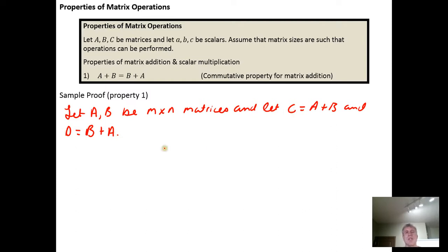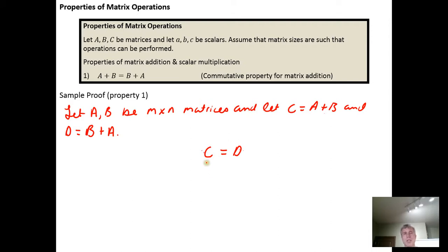Remember, we need to do this generically — not with a concrete example — to demonstrate that it's true for all matrices. For matrix C to equal D, we need to show that every corresponding element in each of the two matrices is the same. We represent the generic element in C as little c sub i j, where i represents the row and j represents the column — so c sub i j is the i-th row, j-th column element in matrix C.